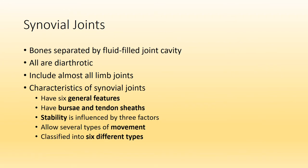The last type of joint classified by structure is known as a synovial joint, and this is the joint type we will focus on for the remainder of this lecture as well as for Chapter 8 Part 2. This is the joint that will have a fluid-filled cavity. Synovial joints you might be familiar with include the shoulder, elbow, and hip joints — all of them are diarthrotic, meaning freely movable. Synovial joints include all limb joints, or almost all limb joints.